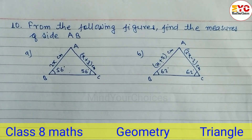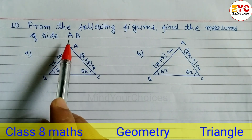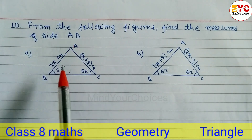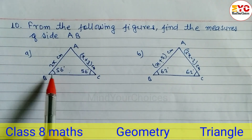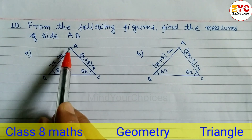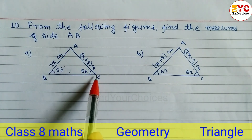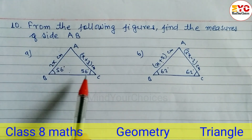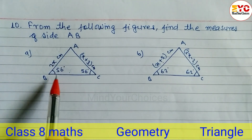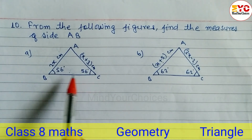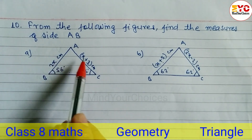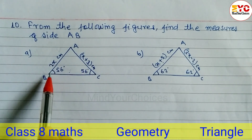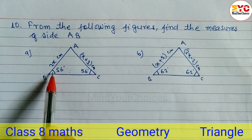This question is taken from geometric triangles. We have to find out the value of AB. You can see that this is an isosceles triangle because the base angles are equal — angle ABC and angle ACB, or we can say angle B and angle C — both are 56 degrees.